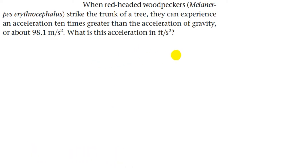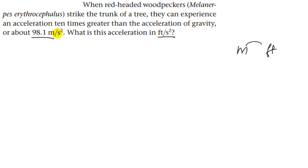In the next question, when a red-headed woodpecker strikes the trunk of a tree, they experience an acceleration which is ten times greater than the acceleration due to gravity, which is about 98.1 meters per second squared. We have to calculate the acceleration in feet per second squared — basically we have to convert meters into feet, because the seconds squared will remain as is. The unit conversion is: one meter is approximately 3.28 feet.